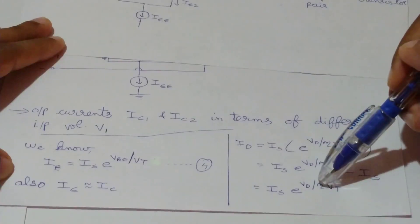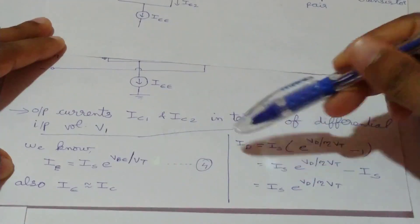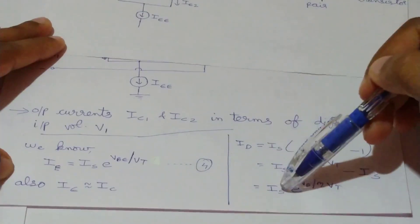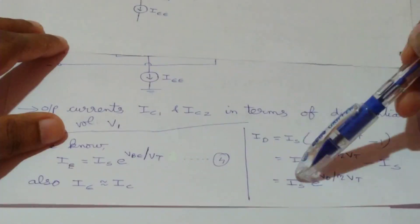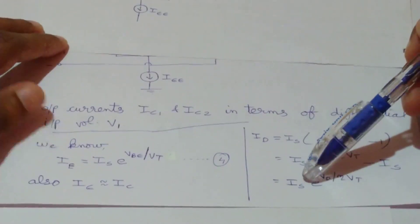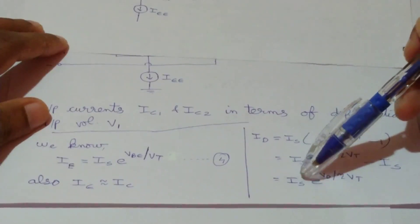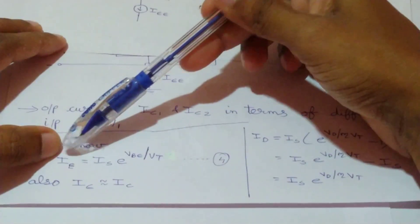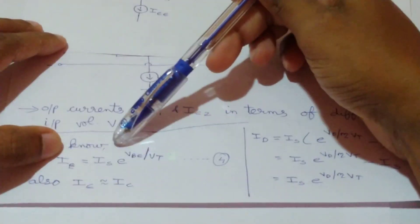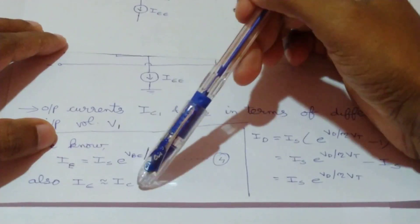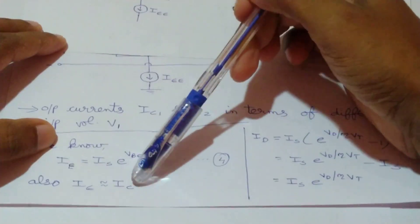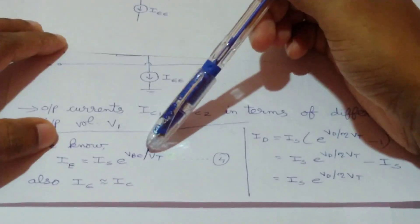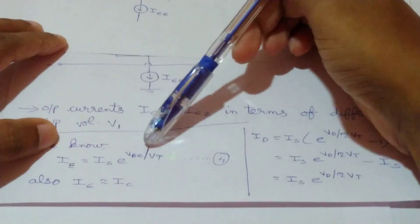Since we are considering matched transistors, IS is the same throughout. For a transistor, the emitter-base junction gives IE = IS·e^(VBE/VT). Since the emitter current is approximately equal to the collector current, IC ≈ IE. Hence IC = IS·e^(VBE/VT). Using this, we write IE1 = IS·e^(VBE1/VT) and IE2 = IS·e^(VBE2/VT).